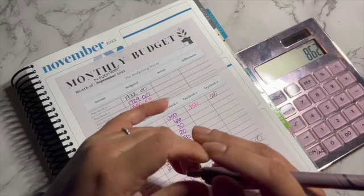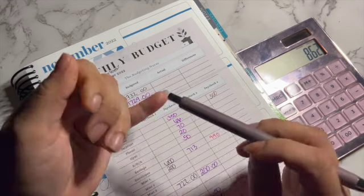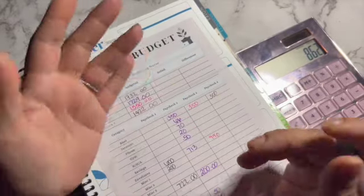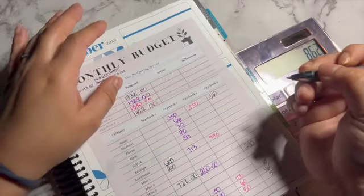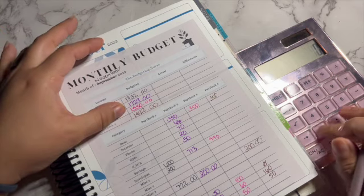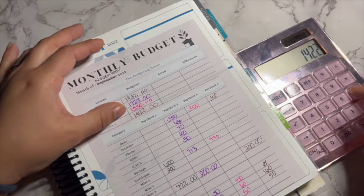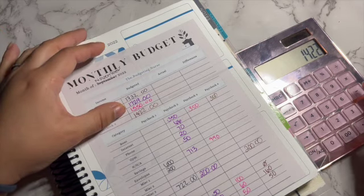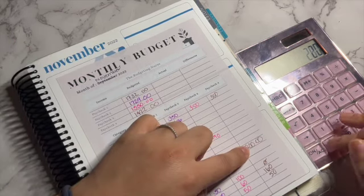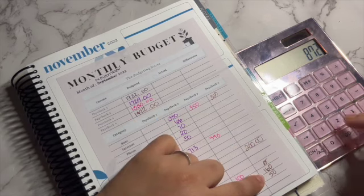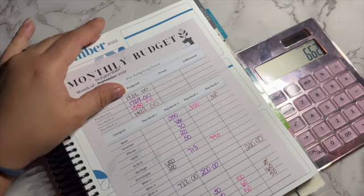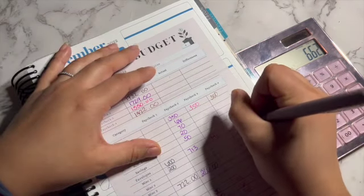On the other hand I did start Christmas shopping already. I'm almost done, I just have to get something for my dad and maybe a few more gifts for the kids. So $1,422 minus $350 minus $200 minus $160 minus $50, we are left with $662 for my envelopes.